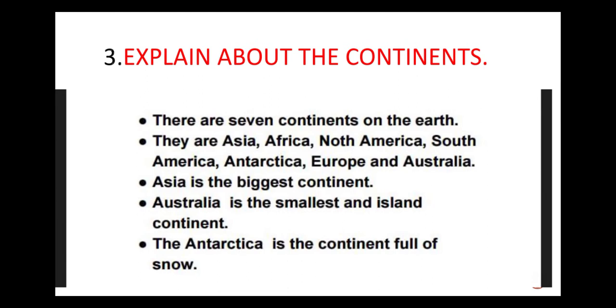The next question: explain about the continents. There are seven continents on the earth. They are Asia, Africa, North America, South America, Antarctica, Europe and Australia. Asia is the biggest continent. Australia is the smallest and island continent. Antarctica is the continent full of snow.